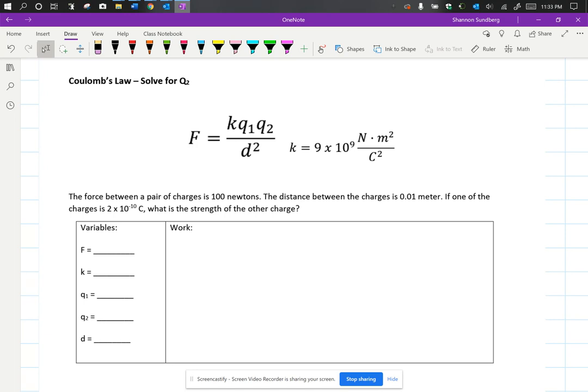Q1 is your first charge, Q2 is your second charge, and distance on the bottom there is squared. Please remember that squaring something and multiplying something by 2 are not the same thing, so make sure you square distance.